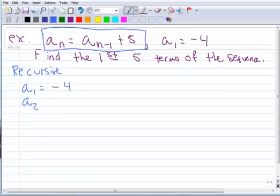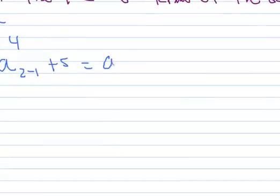Alright, so let's find a sub 2, the second term. That would be 2 minus 1 plus 5, because n, this is our second term right here, so n is 2. And that would look like, well, 2 minus 1 is 1, plus 5.